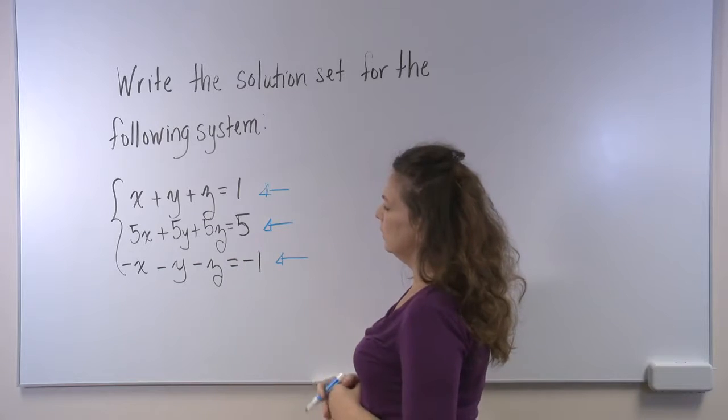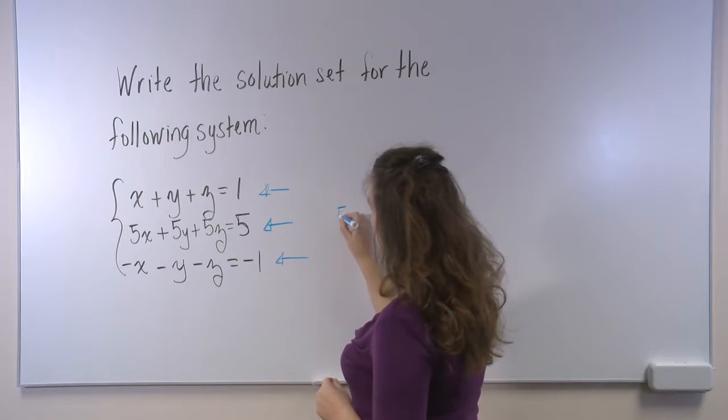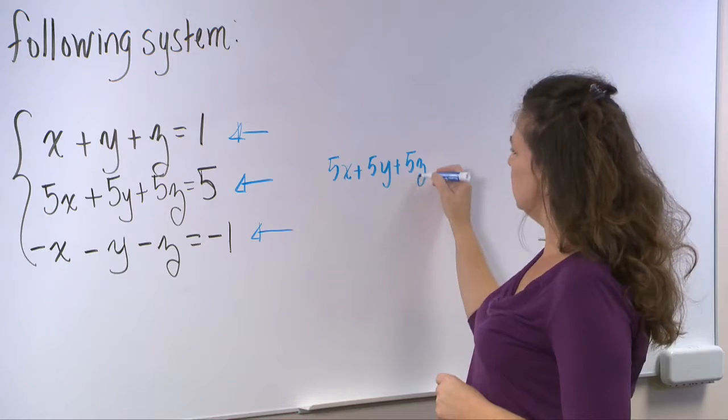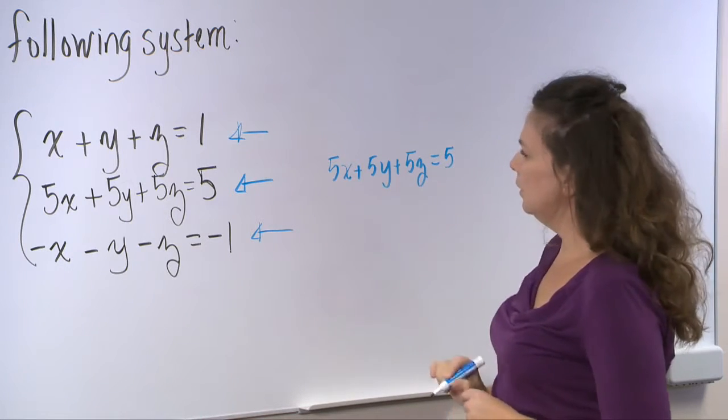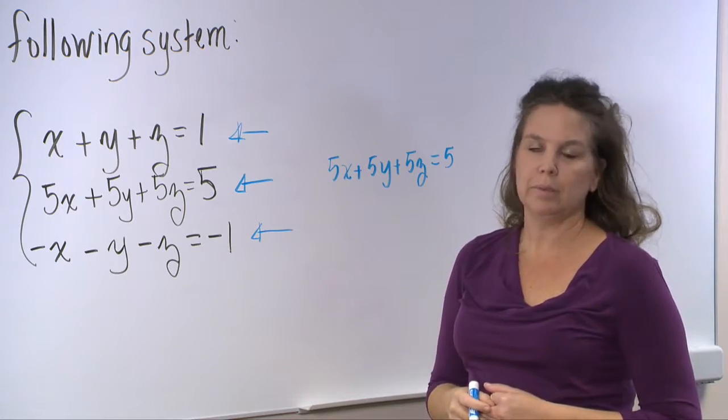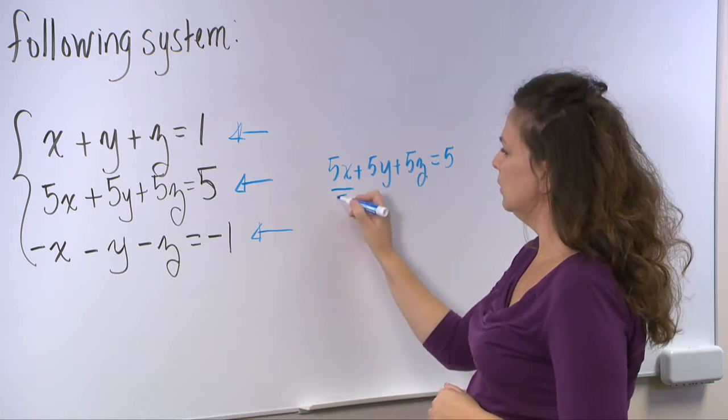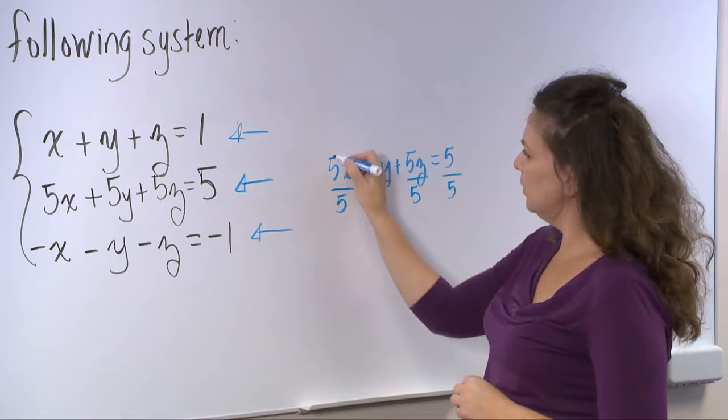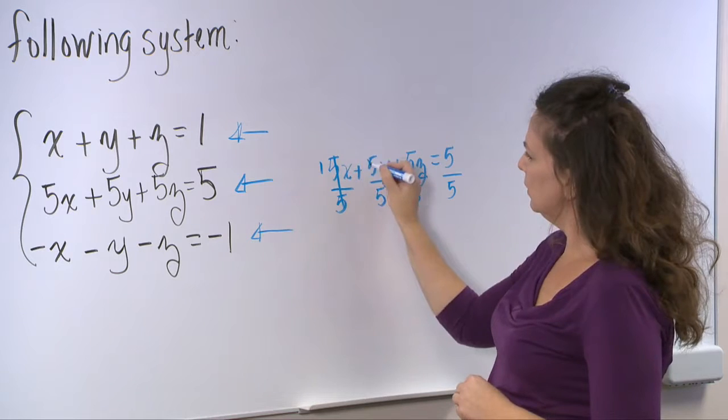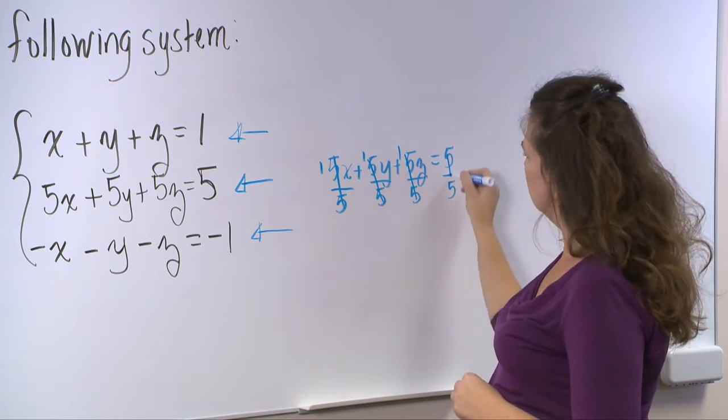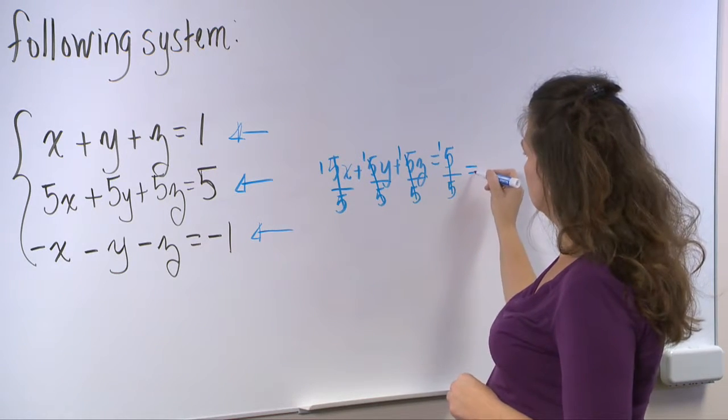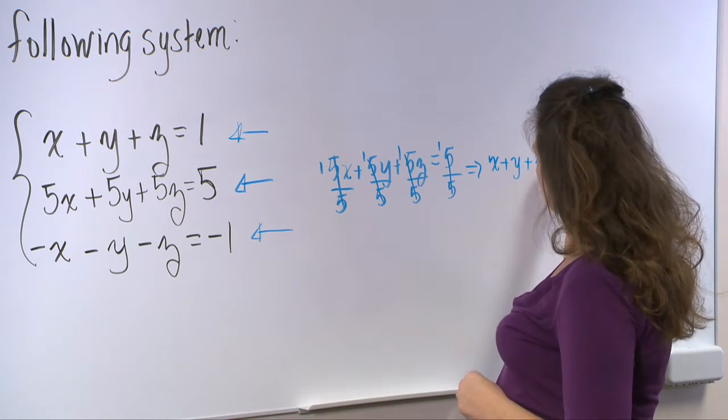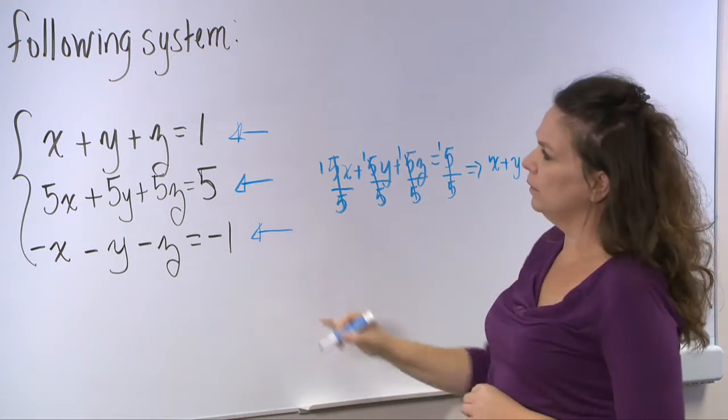So what I notice is if I were to take this second equation of 5x plus 5y plus 5z divided by 5 and divide the entire equation by 5. So if I do that, divide here, here, and here by 5, this divides out to 1, this divides out to 1, 1, and 1. And so then what I have is x plus y plus z is equal to 1, which is the same as the first equation.